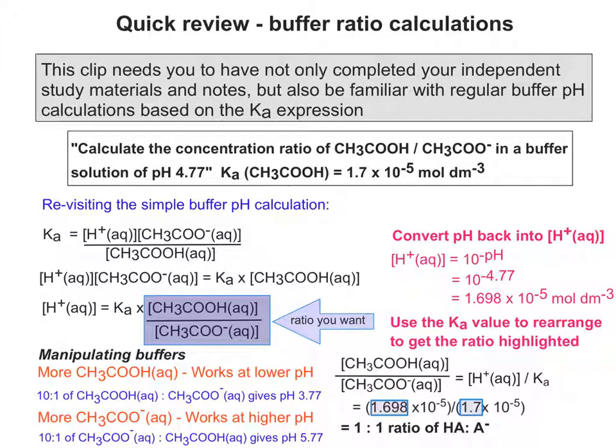In fact, you can control it very precisely. If you were to do a 10 to 1 ratio of ethanoic acid to ethanoate, obviously in favour of the ethanoic acid, you'd lower the working pH to 3.77. If you did it the other way round, with 10 to 1 in favour of ethanoate instead of ethanoic acid, you'd give a pH of 5.77.